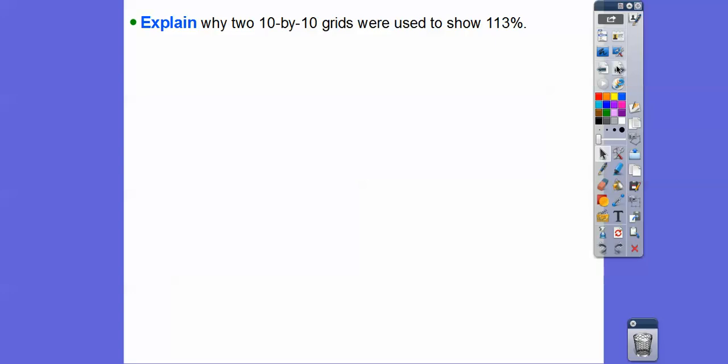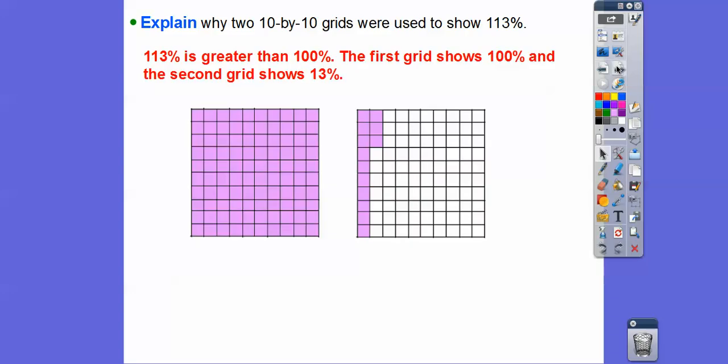So explain why we needed two 10 by 10 grids to show the 113%. Well, the 113% was greater than 100%. So the first grid showed us this 100%, and the second grid showed us the 13% right there. So here's 113% right there. So if we had, say, 213%, I'd need another one of these full ones right here.